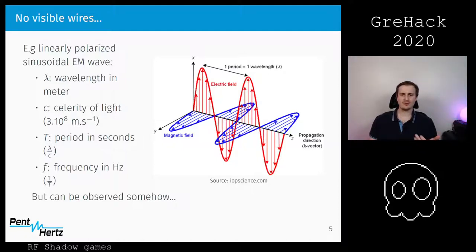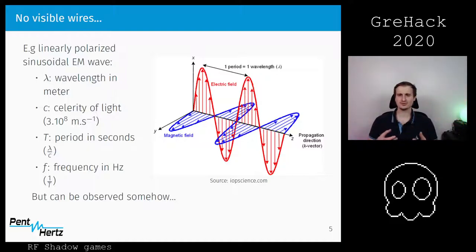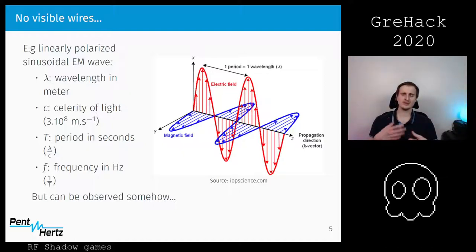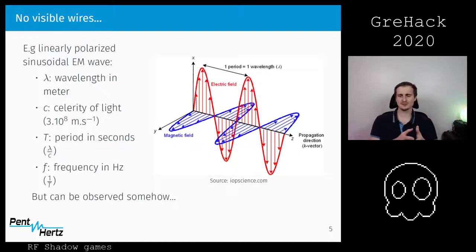The problem for us is that there is no invisible wire, so at some point we'll have to interface with some sort of signal sent over the air — for example, a linear polarized sinusoidal electromagnetic wave that we can interface with using the right antenna. What's important is to identify the frequency used by the signal in order to capture the communication.